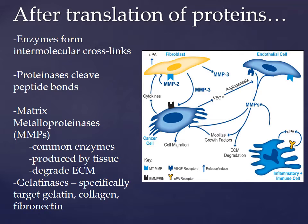One type of MMP is gelatinase. Gelatinases specifically target proteins in the ECM, like gelatin, elastin, collagen, and fibronectin. The ECM is highly regulated, but when it isn't, cancer cells can run rampant and begin to disrupt and remodel the ECM.